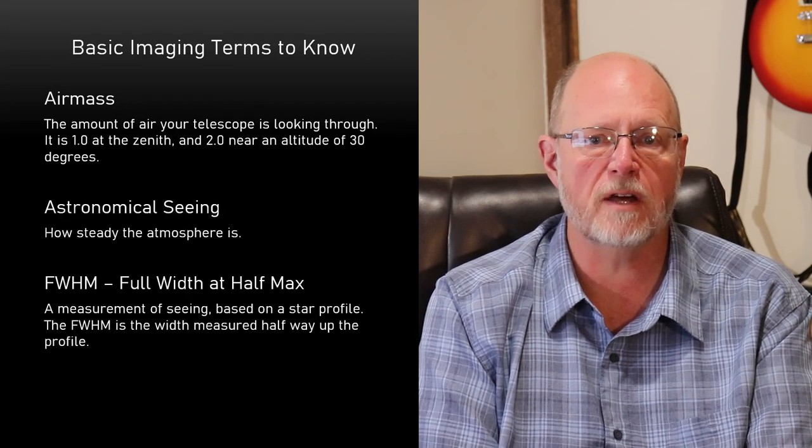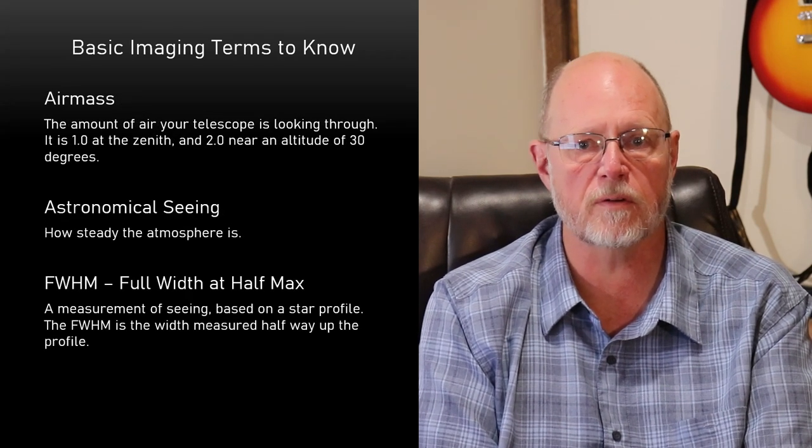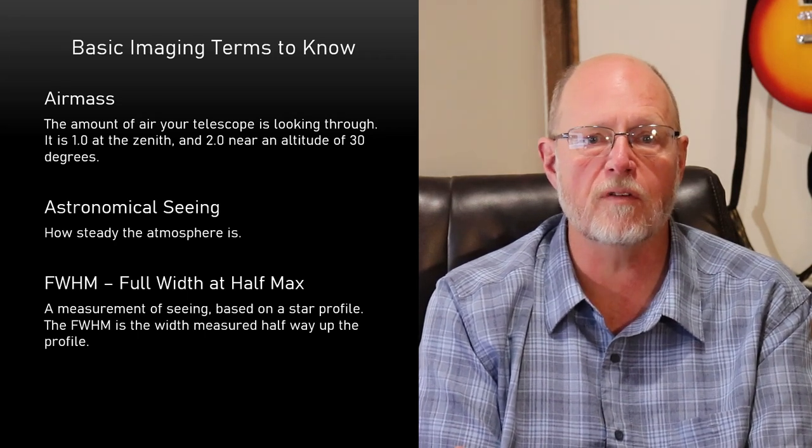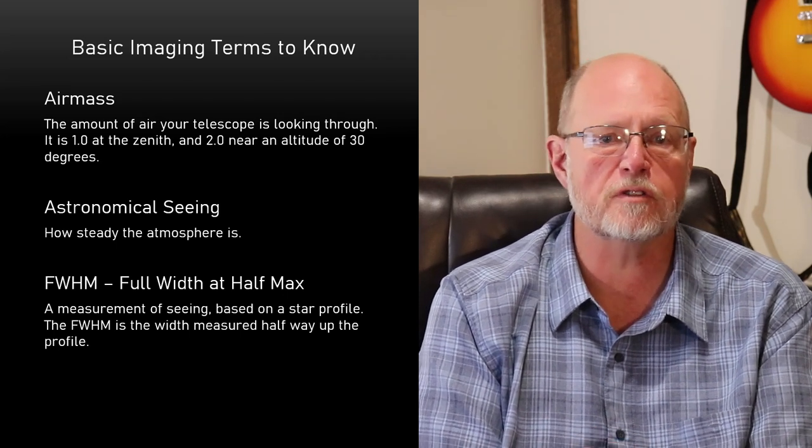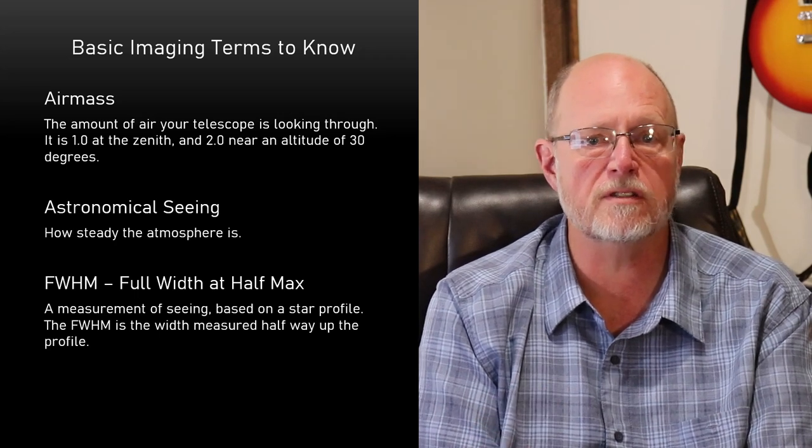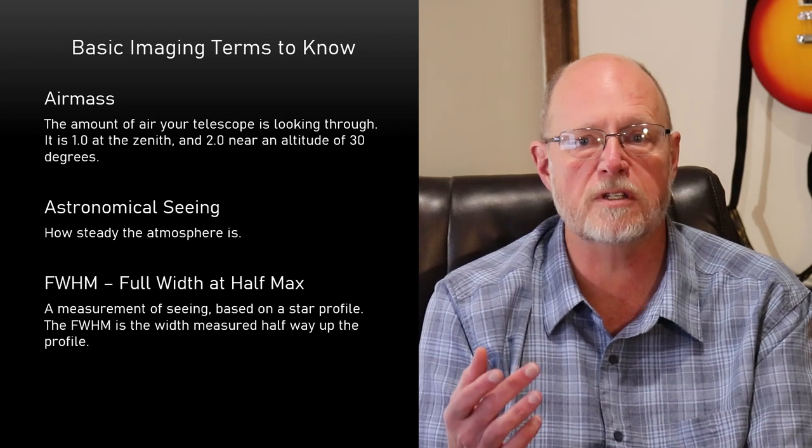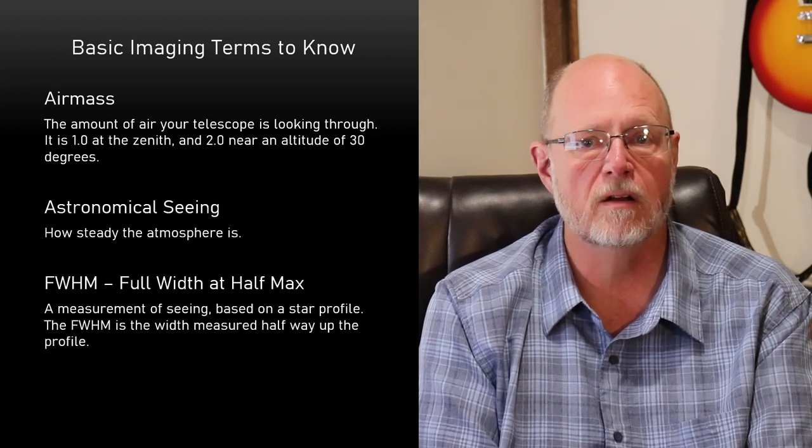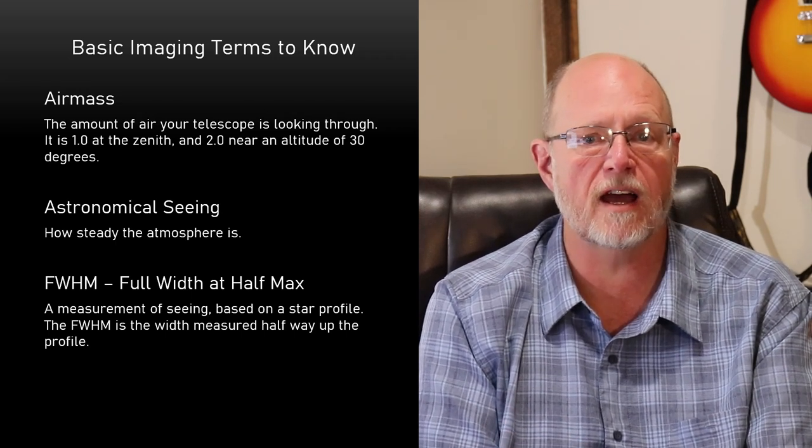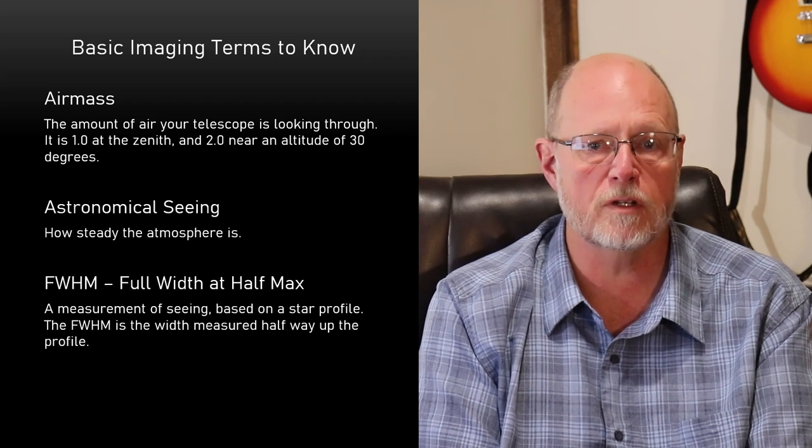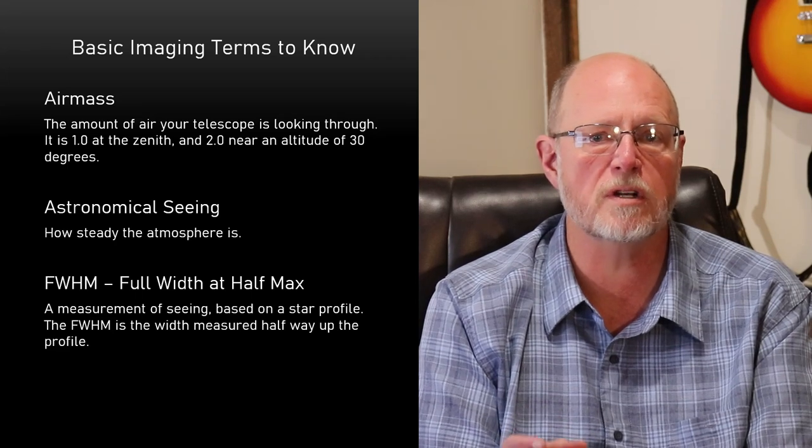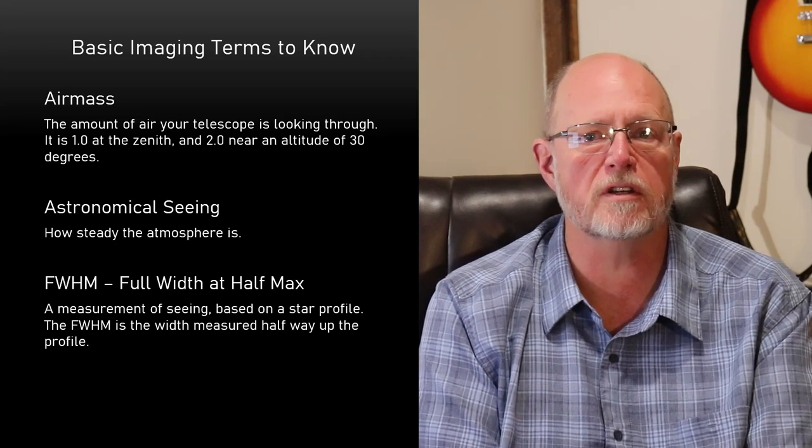Air mass is a measure of the amount of air your telescope is looking through. It depends on the altitude of your target object at the time. Directly overhead is an air mass of 1. As you move closer to the horizon, the air mass increases. At around an altitude of 30 degrees, the air mass becomes 2, and you're imaging through twice as much air. Below that, the air mass increases very quickly. The best images are taken high in the sky, at low air mass values, well below 2. When you image higher, less light is lost through the atmosphere, there's less distortion and more detail available, and stars will be smaller on your images.